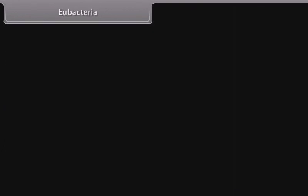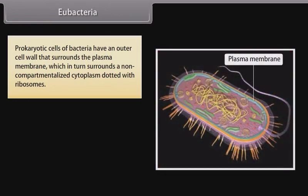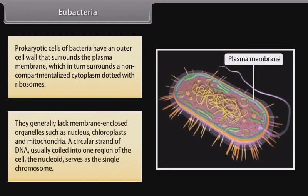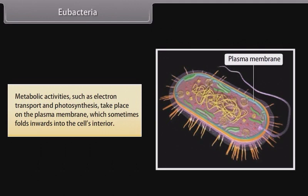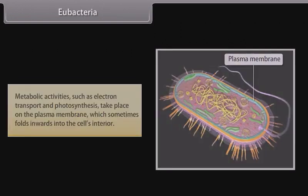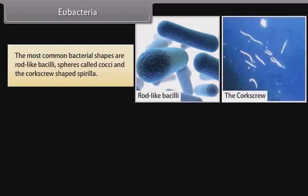Eubacteria: prokaryotic cells of bacteria have an outer cell wall that surrounds the plasma membrane, which in turn surrounds a non-compartmentalized cytoplasm dotted with ribosomes. They generally lack membrane-enclosed organelles such as nucleus, chloroplasts, and mitochondria. A circular strand of DNA, usually coiled into one region of the cell called the nucleoid, serves as the single chromosome. Metabolic activities such as electron transport and photosynthesis take place on the plasma membrane, which sometimes folds inward into the cell's interior.